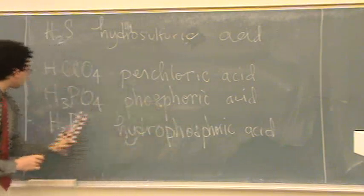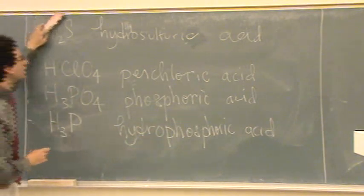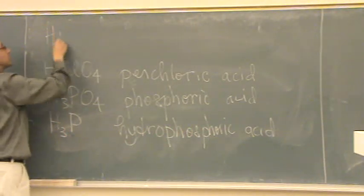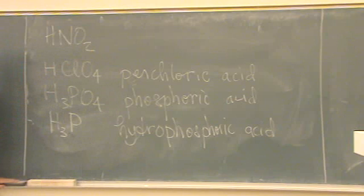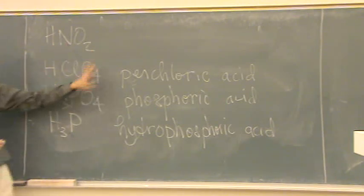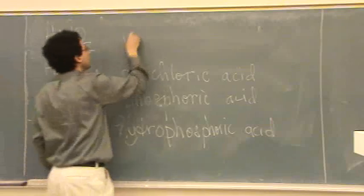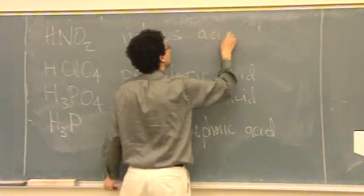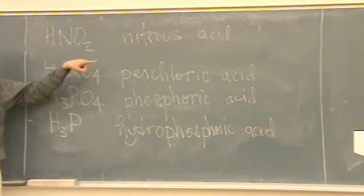If you had something like, I'll just erase this one. HNO2, now it's a nitrite. It's not a polyatomic, there's no hydro. So you know, nitrous acid. Because the "-ite", goes to an "-ous".